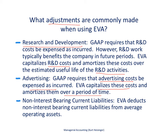The third common adjustment has to do with non-interest bearing current liabilities. EVA says we can deduct these non-interest bearing current liabilities from our average operating assets, and therefore we come up with a new and lower average operating asset amount.